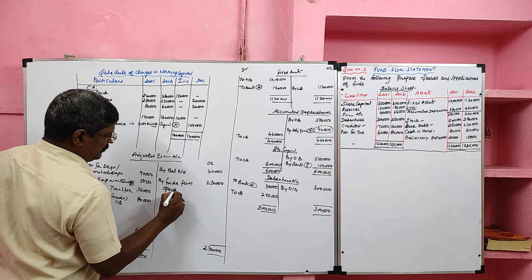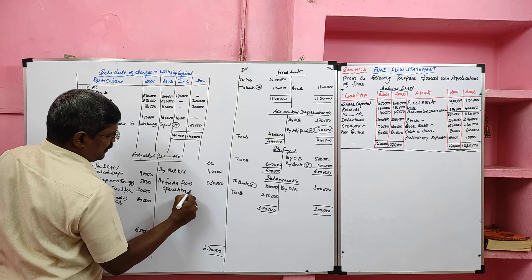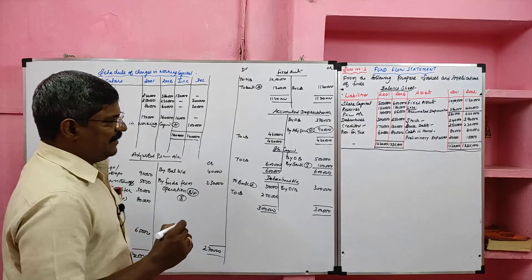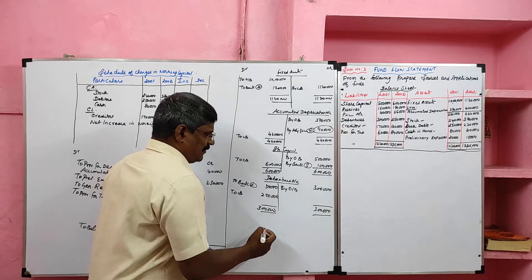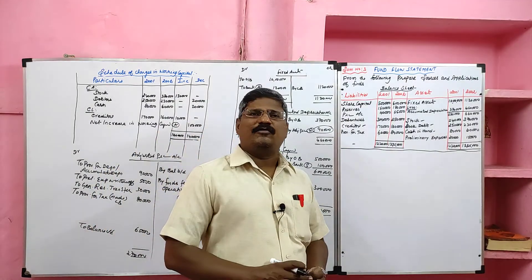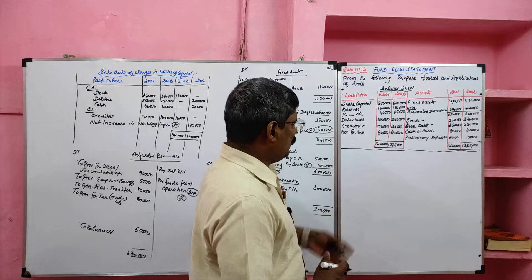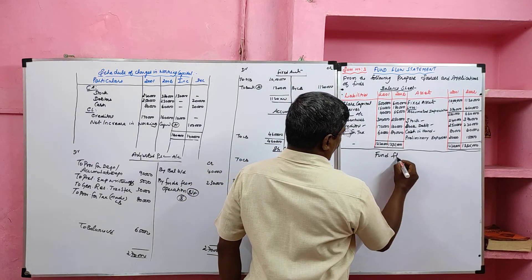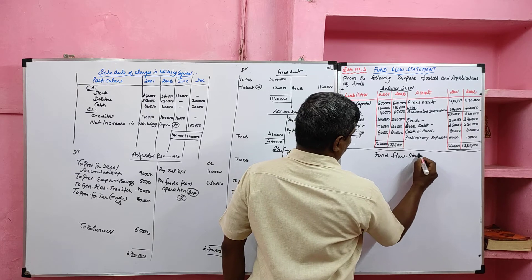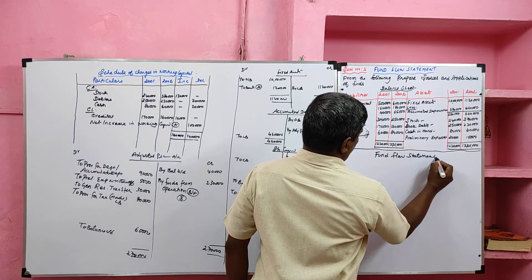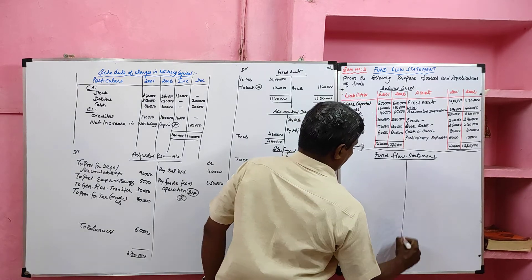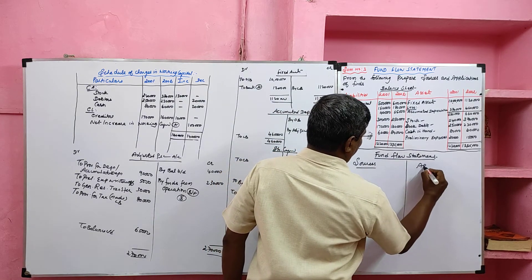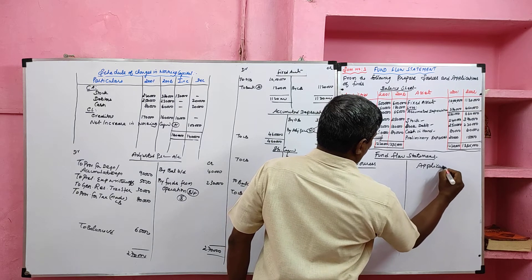Funds from operation is a balancing figure and goes to the sources side of the fund flow statement. After preparing ledger accounts, we prepare the fund flow statement. The fund flow statement has two sides: left-hand side where sources are recorded, and right-hand side where applications are recorded.